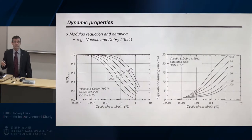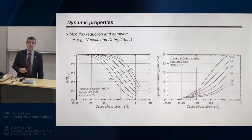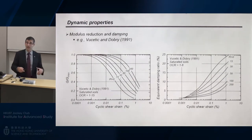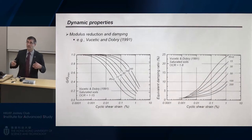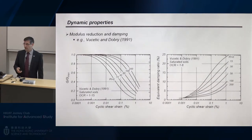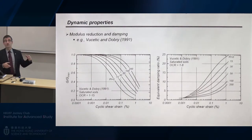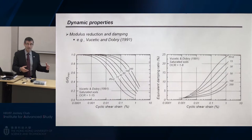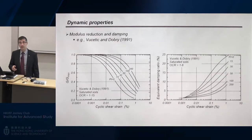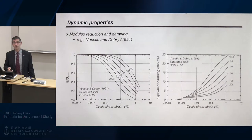Dynamic properties are often represented in terms of modulus reduction versus strain amplitude and equivalent damping ratios under strain-amplitude-controlled cyclic loading. As the material starts to yield and modulus drops, you get more hysteresis — more energy dissipation and higher damping ratios. In design practice, those behaviors are what we are most focused on representing in any analysis or design, and that's what we want a constitutive model to be able to reproduce.